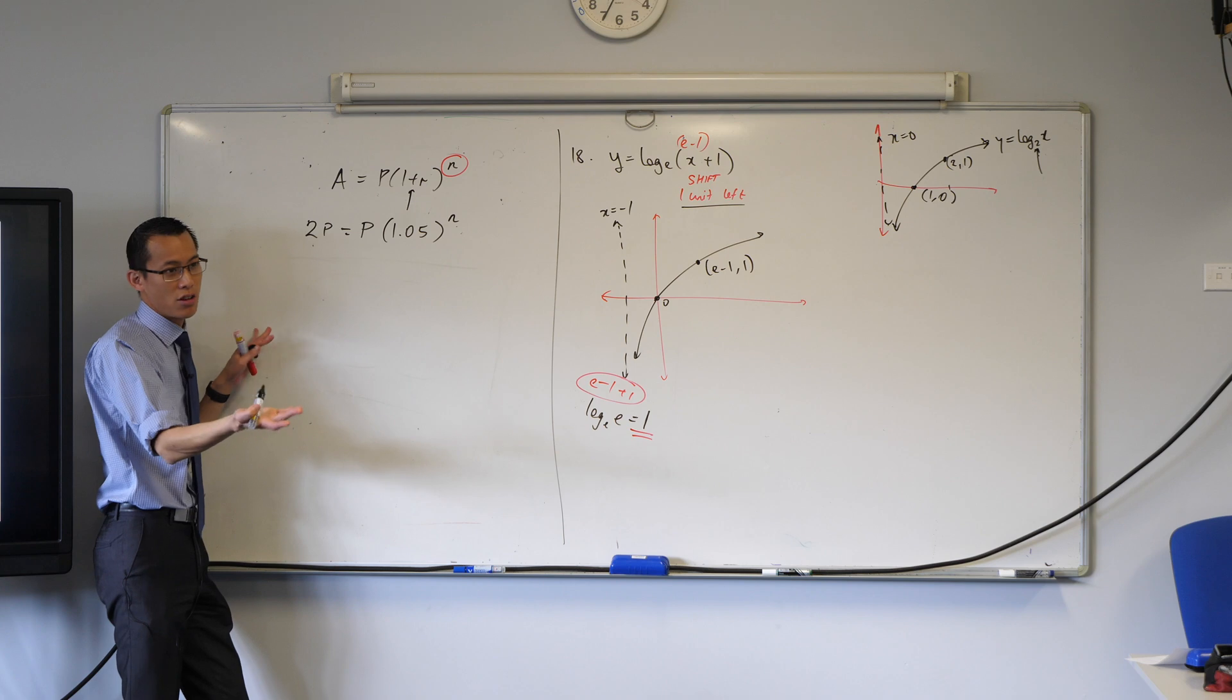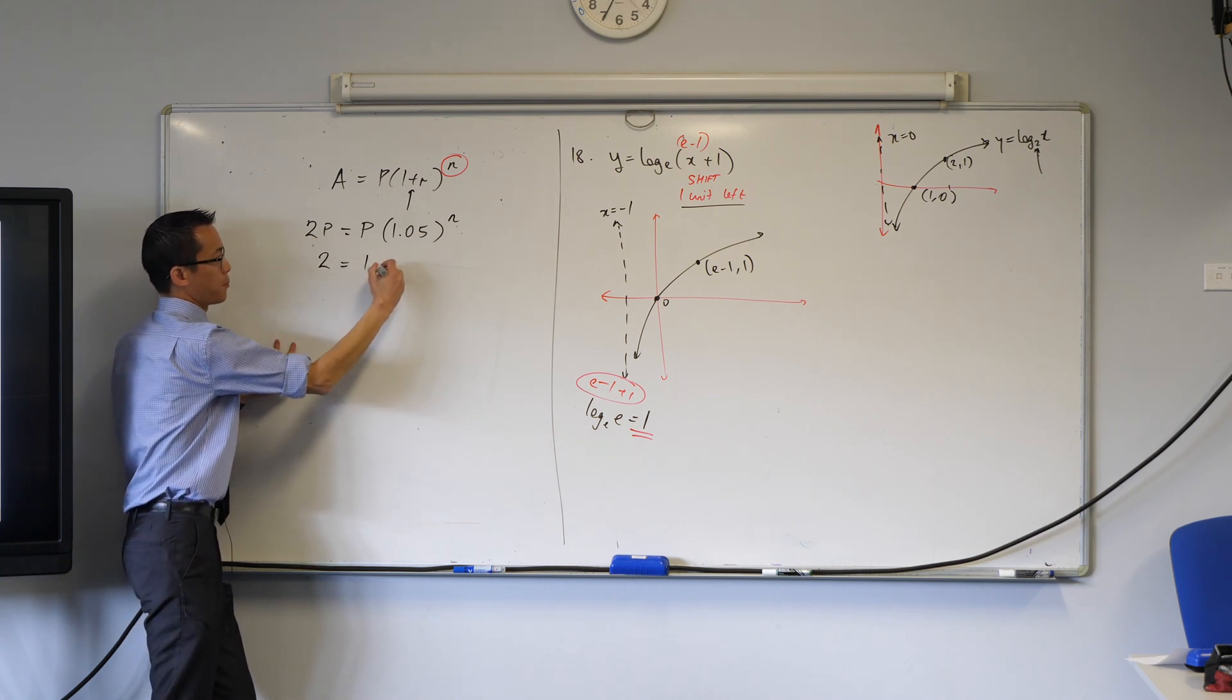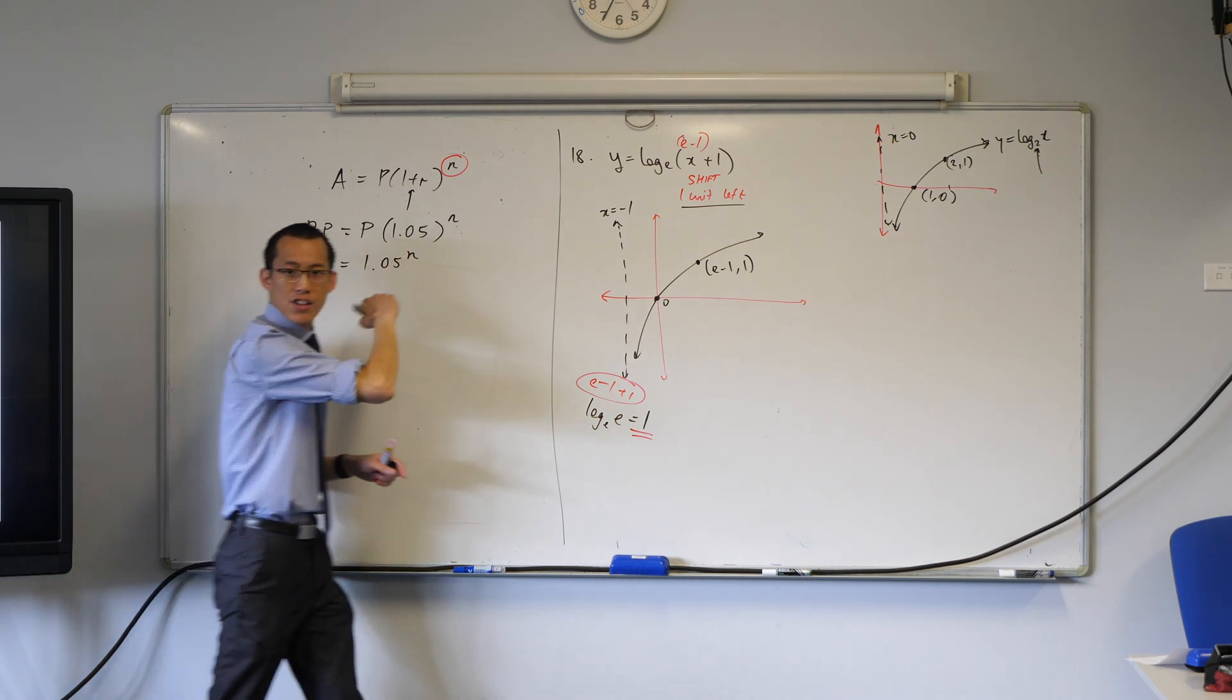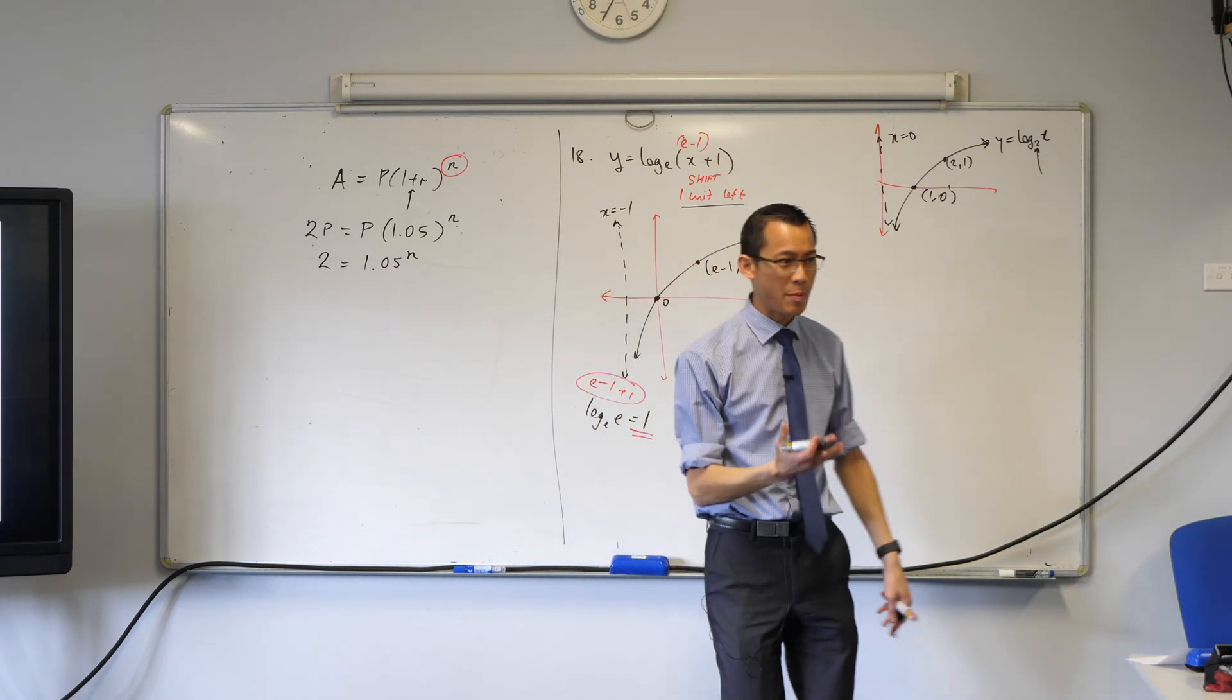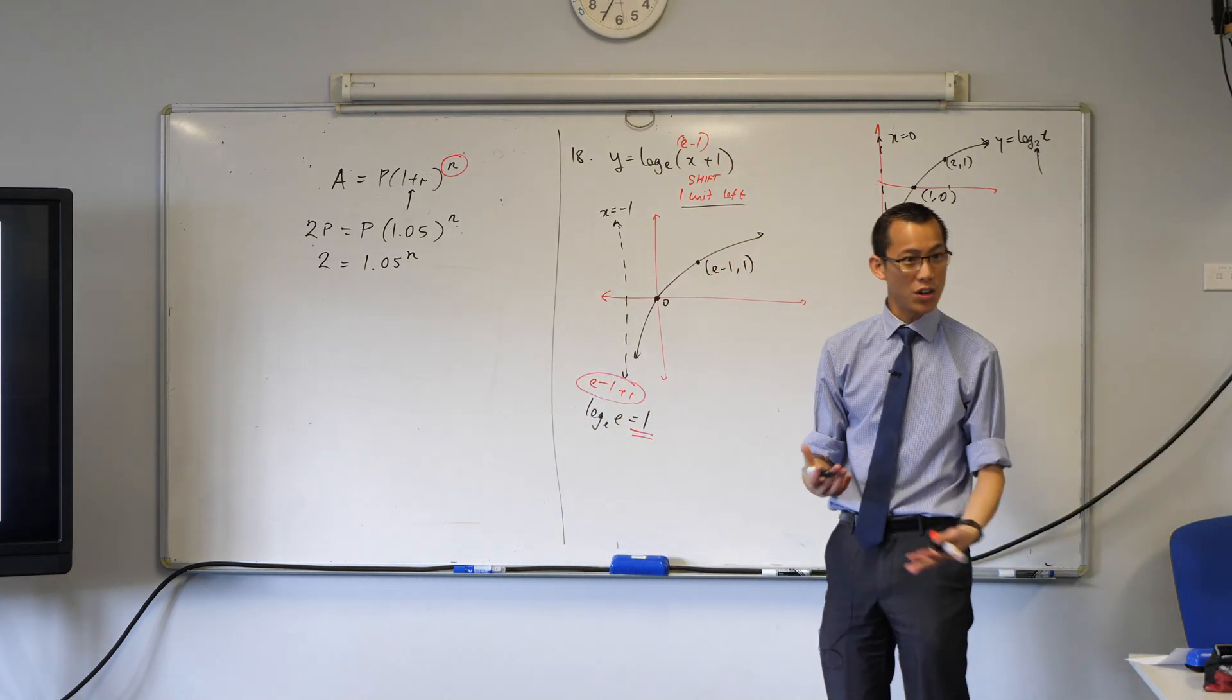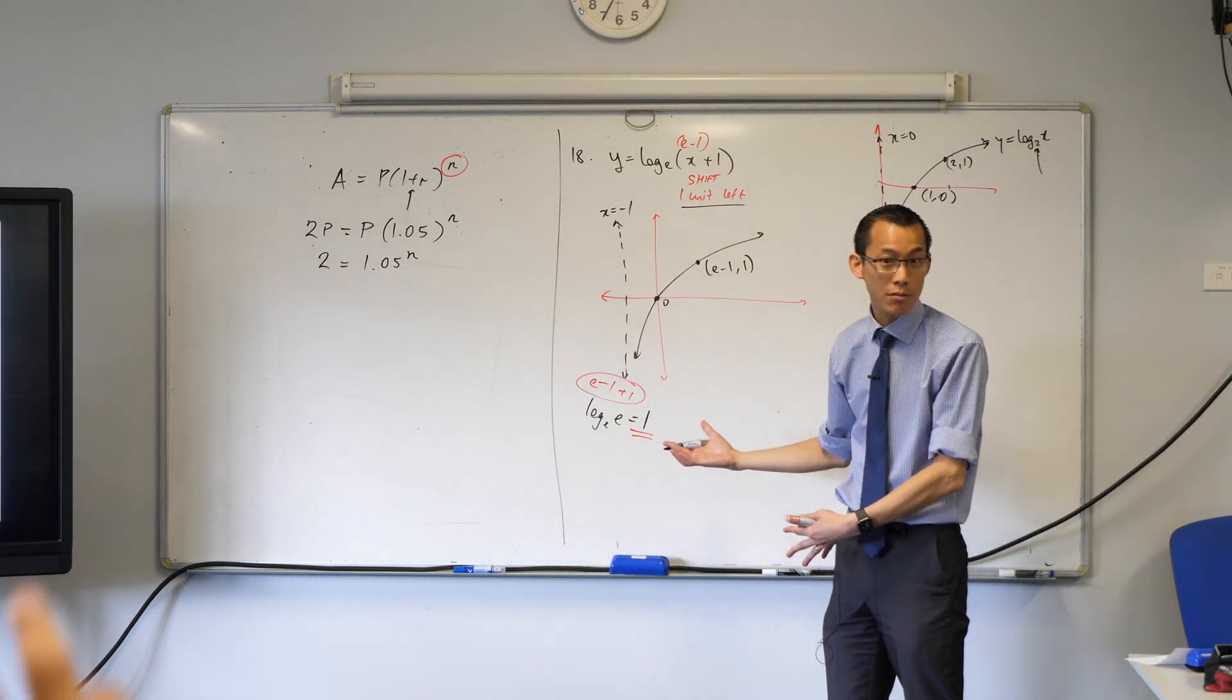You can do that because P is not zero. So I get this. And then you're like, well what do I do with this guy? It's an exponential equation, but I want to make N the subject. So what do I do?